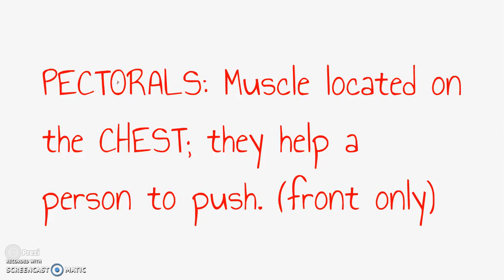For location on the body you would write chest. In the third column, can I see this muscle from the front view? You would write yes. In the fourth column, can I see this muscle from the back view? You would write no. So again you should write for number one: pectorals, chest, yes, no. I hope that makes sense. Now let's move on.